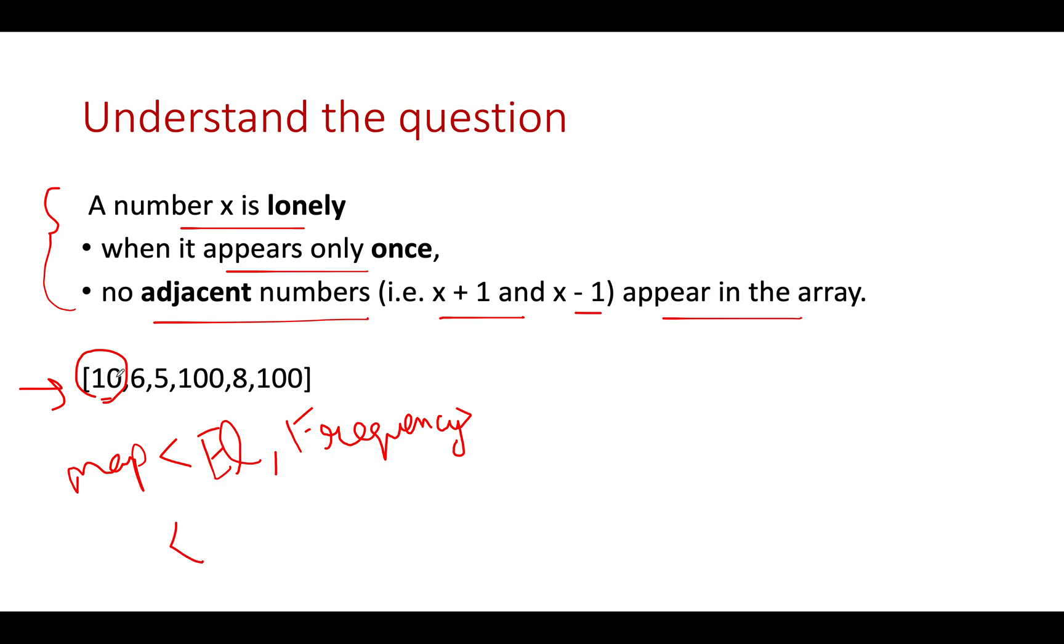10 occurred once, so its frequency is 1. 6 occurs once, frequency is 1. 5 occurs once, frequency is 1. 100 occurs twice, frequency is 2. 8 occurs once, frequency is 1. Let's get started.